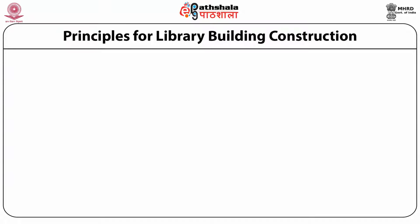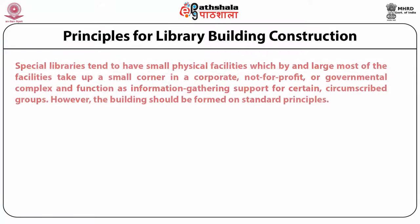Now, coming to the principles for library building construction. Special libraries tend to have small physical facilities which by and large take up a small corner in a corporate, not-for-profit, or governmental complex and function as information-gathering support for certain circumscribed groups. The building should be formed on standard principles, which include functional design, open access, flexibility, provision of areas, modular design, and future growth.